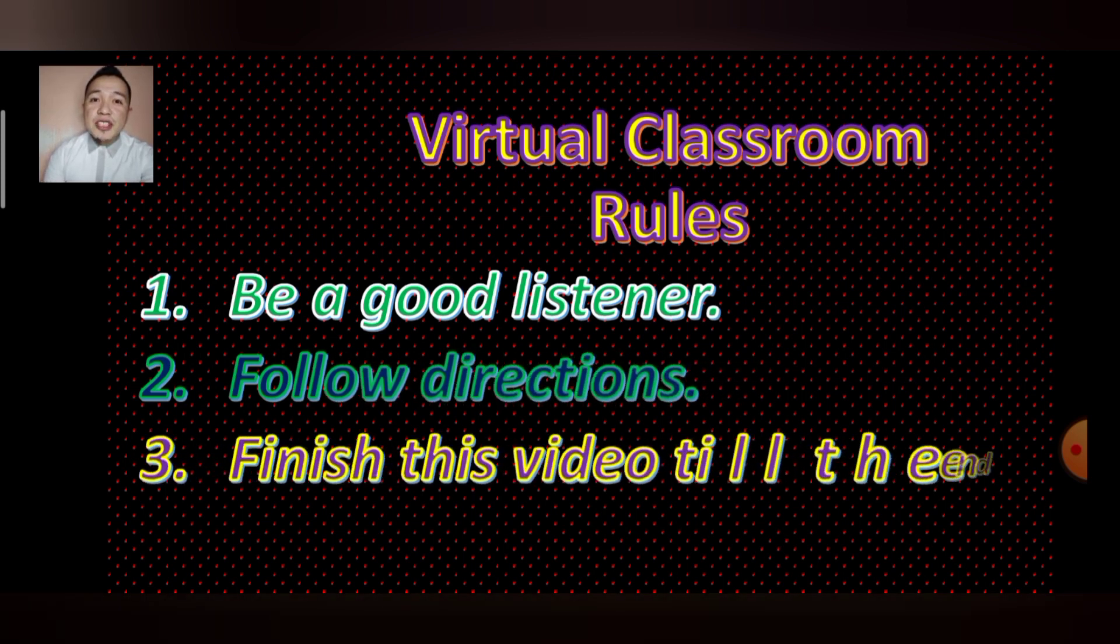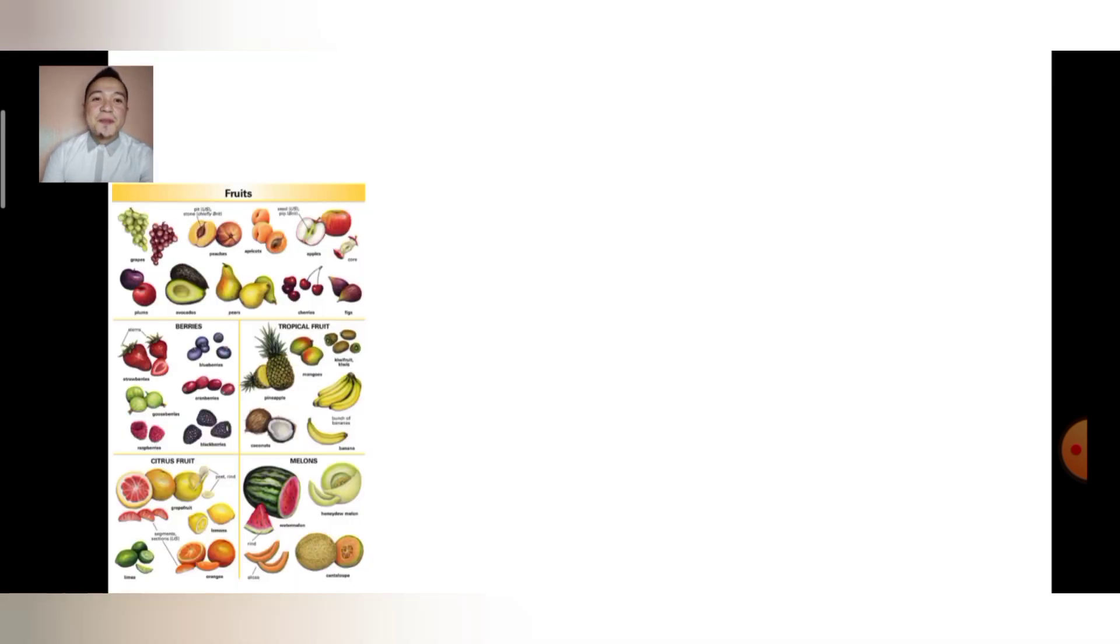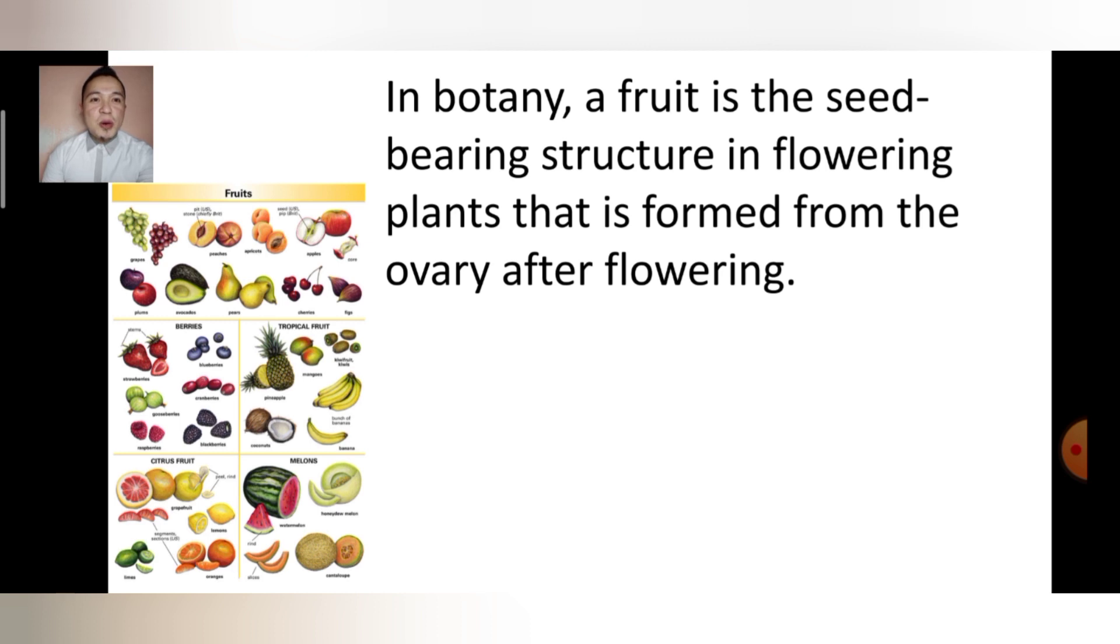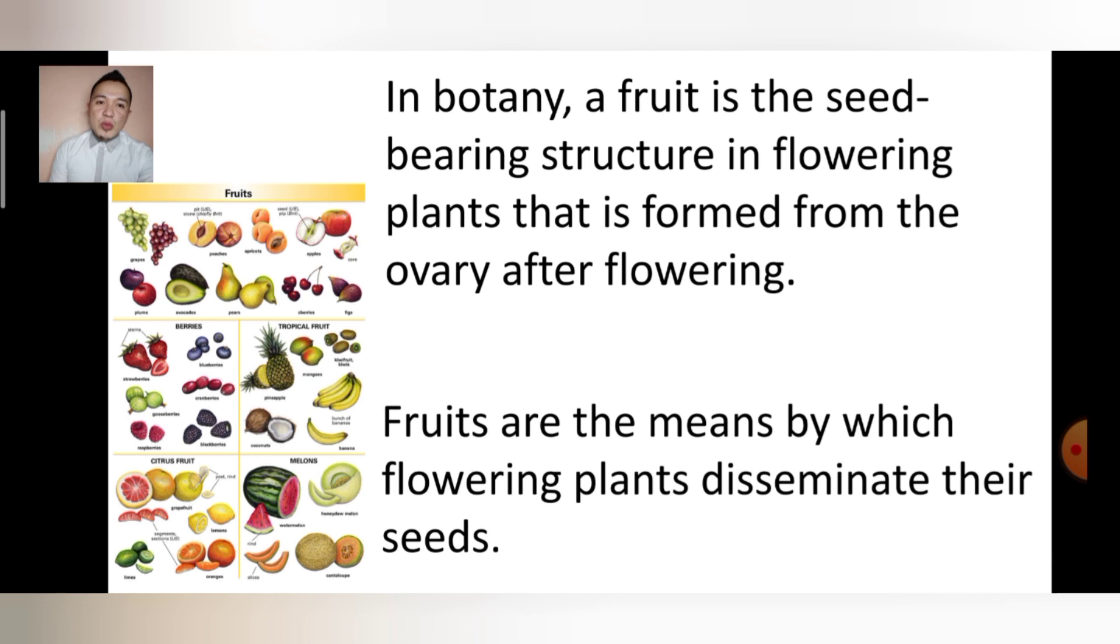So what can you see in the picture? Yes, fruits. Accordingly, in botany, a fruit is a seed-bearing structure in flowering plants that is formed from the ovary after flowering. We talked about the topic that we had last time about flowering and non-flowering. Fruits are the means by which flowering plants disseminate their seeds. You can have another plant because of the fruits, because the fruits bear seeds, and the seeds will grow into new plants.